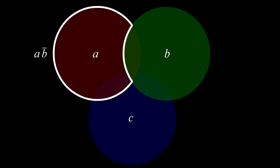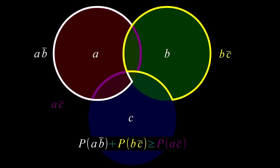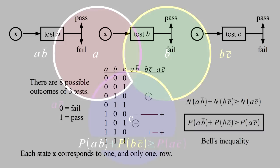The region corresponding to A and not B is inside the A circle and outside the B circle, outlined here in white. The B and not C region is outlined in yellow, and the A and not C region is outlined in magenta. The magenta region falls completely within the white and yellow regions, but there are parts of the white and yellow regions outside the magenta region. So the area and probability of the white region, plus the area and probability of the yellow region, is greater than or equal to the area and probability of the magenta region.